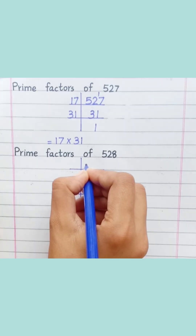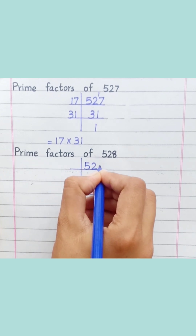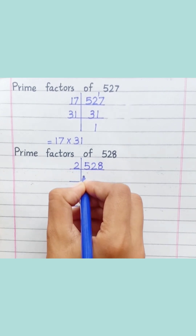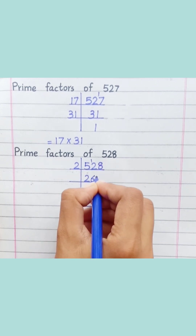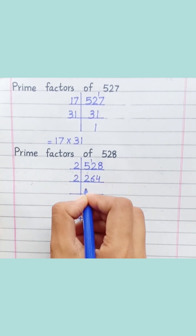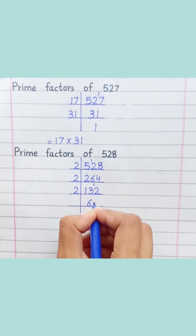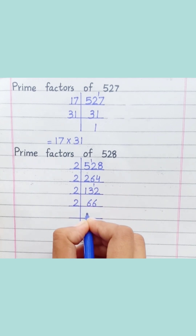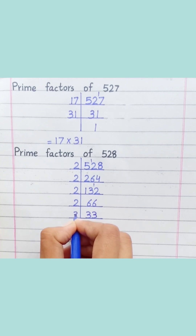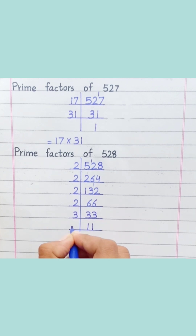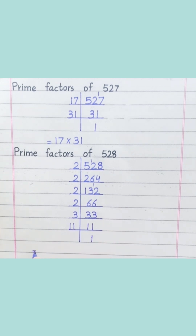Prime factors of 528. 2 twos are 4, 2 sixes are 12, 2 fours are 8, 2 ones are 2, 2 threes are 6. 3 ones are 3, 11 ones are 11. Equal 2 x 2 x 2 x 2 x 3 x 11. Thank you.